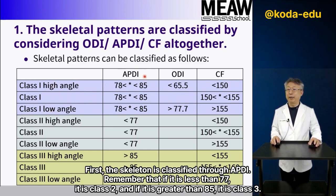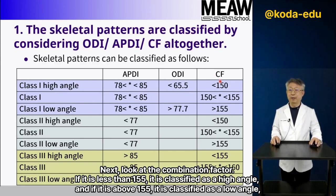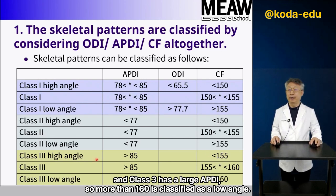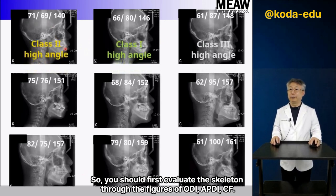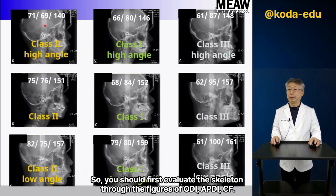The skeleton is classified through PDI. If PDI is less than 77, it is class II; if it is greater than 85, it is class III. Next, look at the combination factor (CF). If CF is less than 155, it is classified as high angle; if it is above 155, it is classified as low angle. Class III has a large APDI, so more than 160 is classified as low angle. You should evaluate the skeleton through the figures of ODI, APDI, and CF.